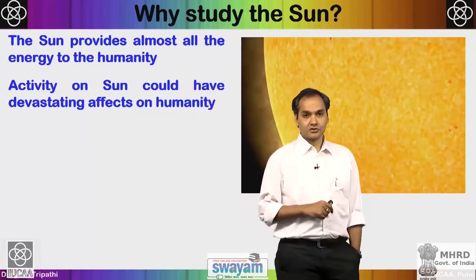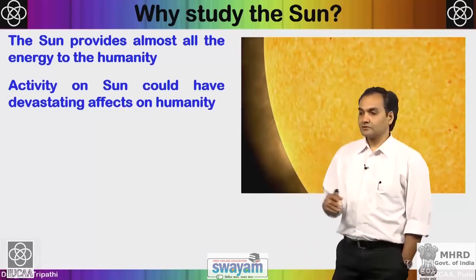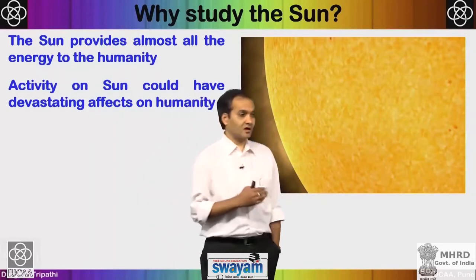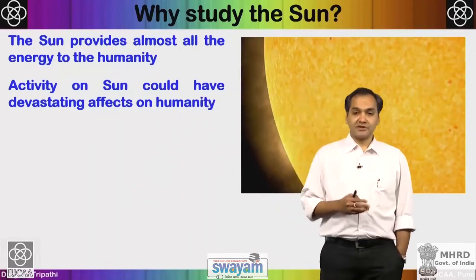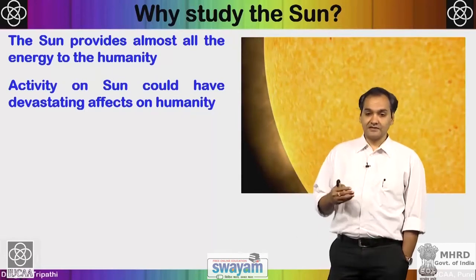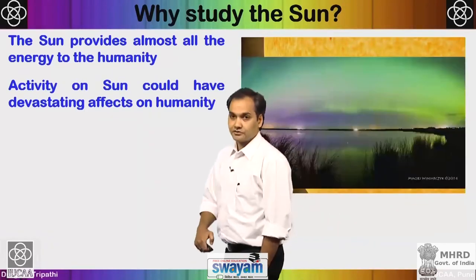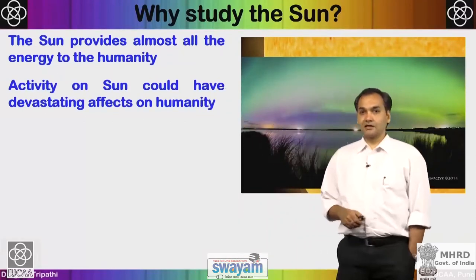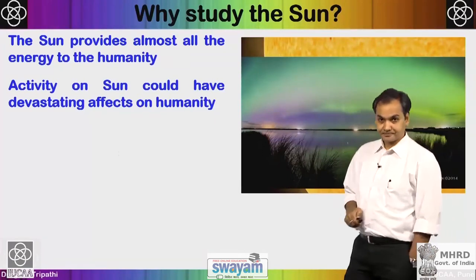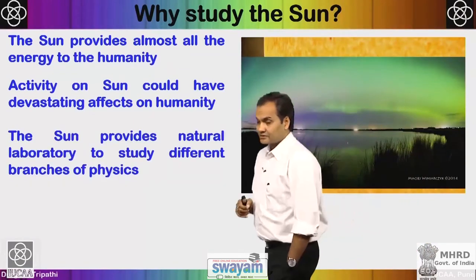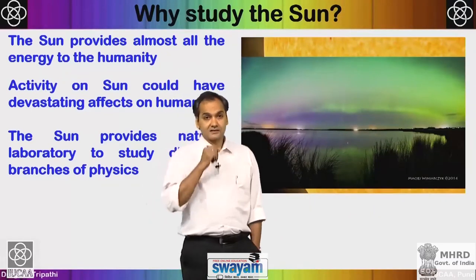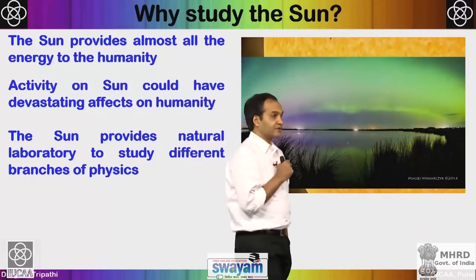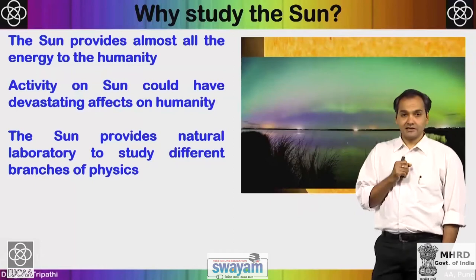Here is an animation showing how solar energy travels through the interplanetary medium. Thankfully, we have the magnetosphere which stops most high-energy particles. Sometimes these particles penetrate Earth's magnetic field and produce aurorae — for example, Aurora Borealis, as seen from Norway. In addition to effects on humanity, the sun provides a natural laboratory to study different branches of physics.